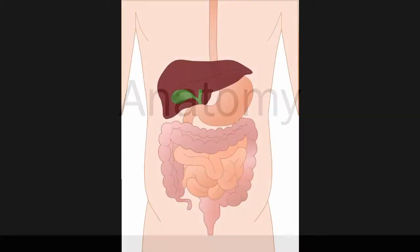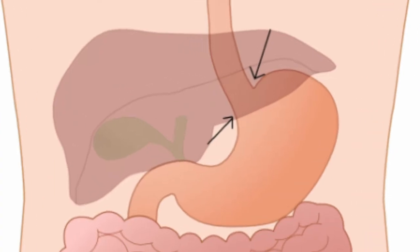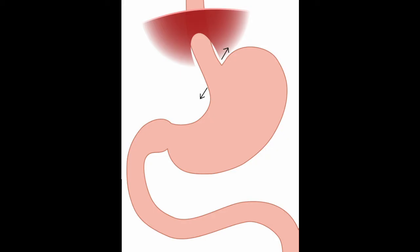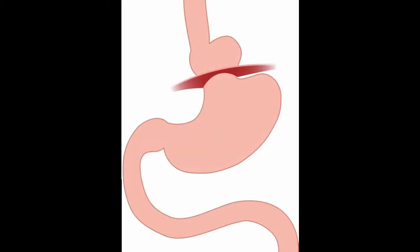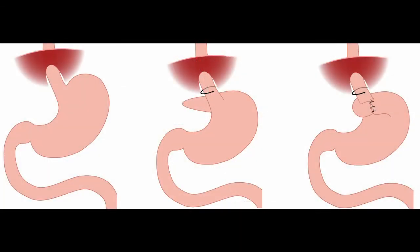Anatomy. Your lower esophageal sphincter is the valve between your esophagus and stomach. It is possible for your sphincter to be too loose, or for the opening in the diaphragm muscles around it to be too wide, allowing for acid reflux or even herniation or bulging of your stomach through this opening into your chest. These conditions can damage your esophagus and cause discomfort. This sphincter can be tightened surgically by wrapping the top portion of the stomach around your esophageal sphincter to reinforce the valve. This will prevent acid reflux and allow your esophagus to heal.